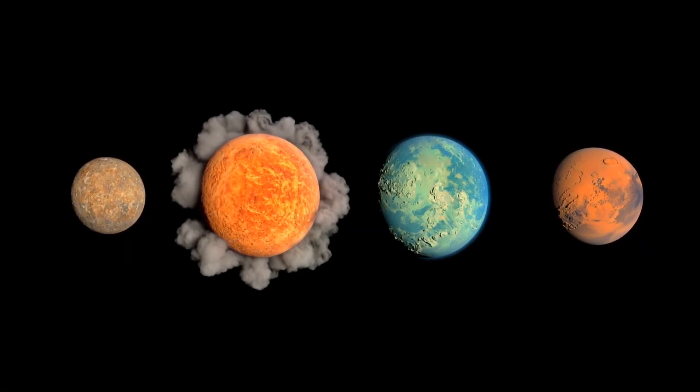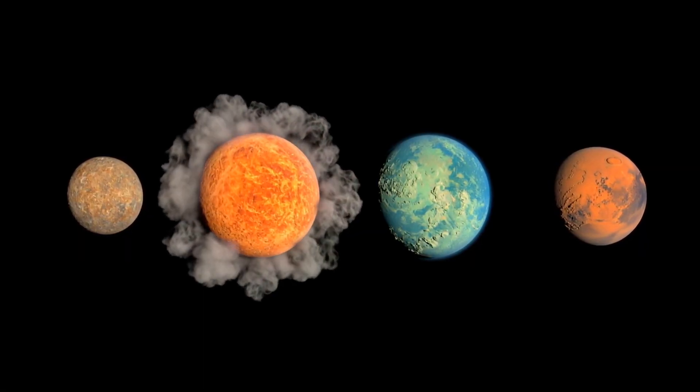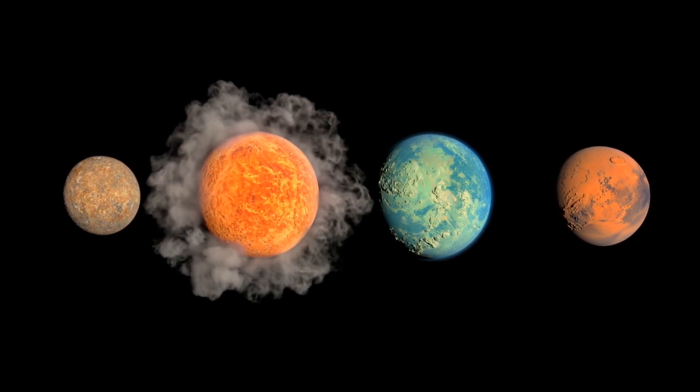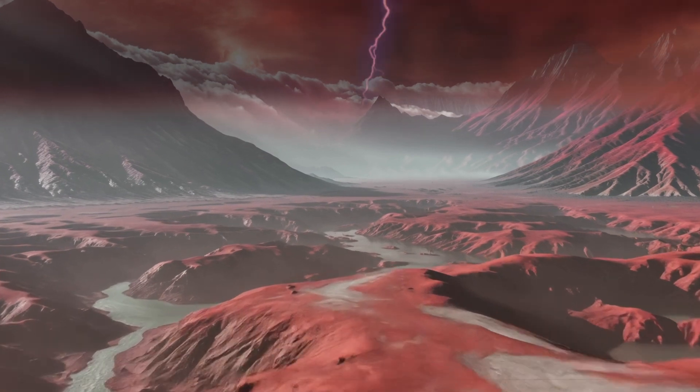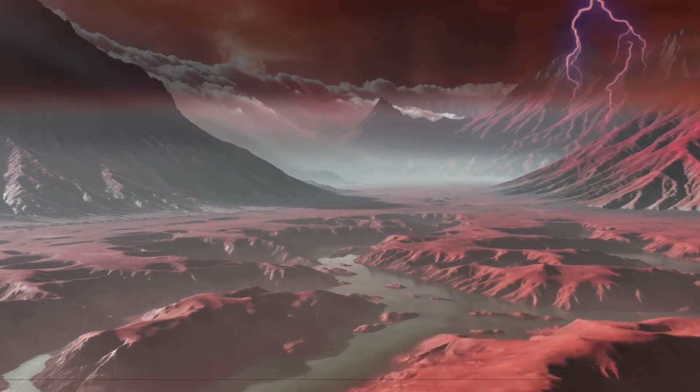Venus also has, by far, the densest atmosphere of all the terrestrial planets. It is composed mostly of carbon dioxide and thick clouds of sulfuric acid that cover the sky.